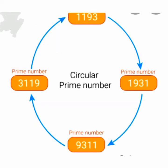Let's see the figure. Here the number is 1193. After rotating it becomes 1931, then 9311, then 3119. The original number as well as all the rotation numbers are prime, so you can say this is a circular prime number.